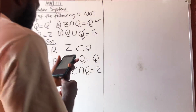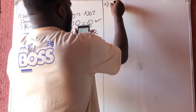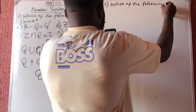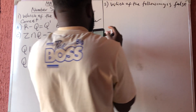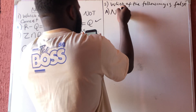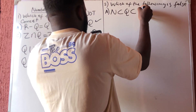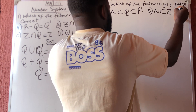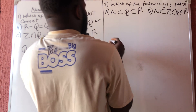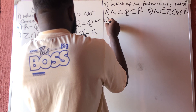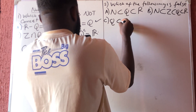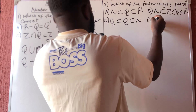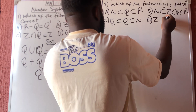Question number two also asks: which of the following is NOT correct? Option A says N is a subset of Q and Q is a subset of R. Option B says N is a subset of Z, which is a subset of Q, which is a subset of R. Option C says Q is a subset of Q, which is a subset of N. Option D says Z is a subset of Q, which is a subset of R, which is a subset of C.